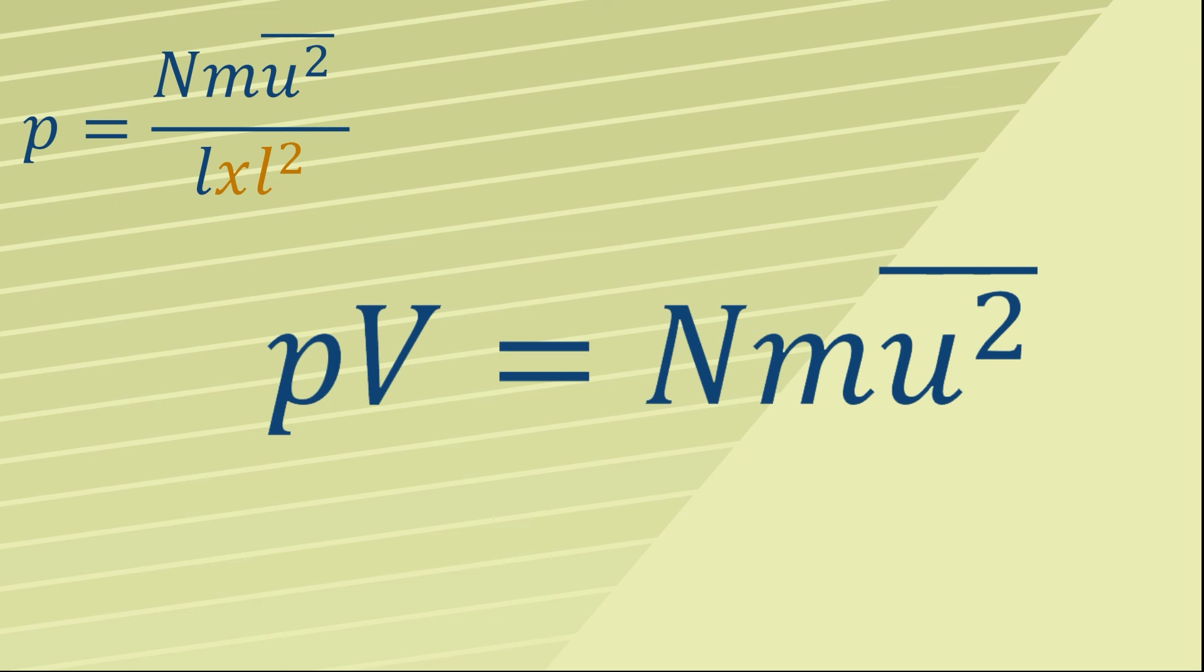Now what's really exciting about this formula is that we're beginning to link individual properties of particles, their mass, their average speed, to bulk properties like pressure and volume. And we'll have much more to say about the implications of this really powerful formula in part two of this video.